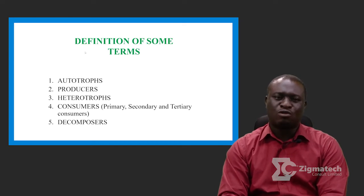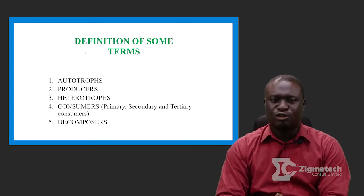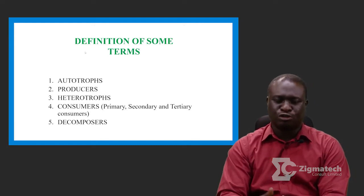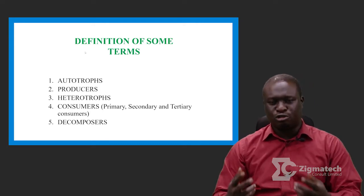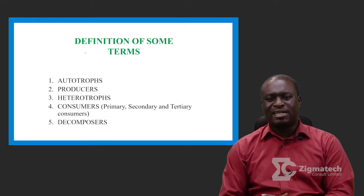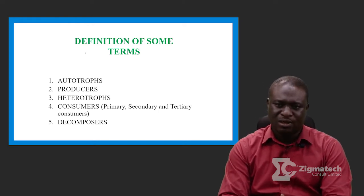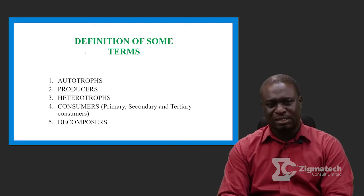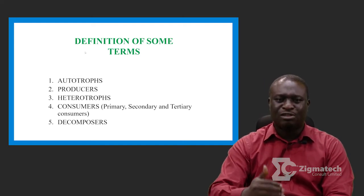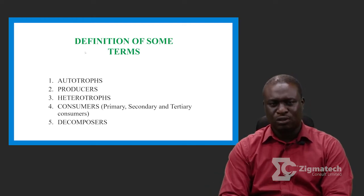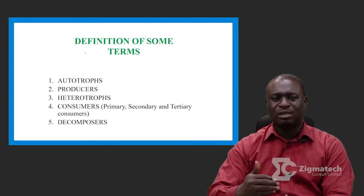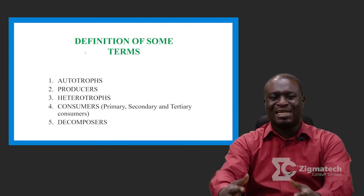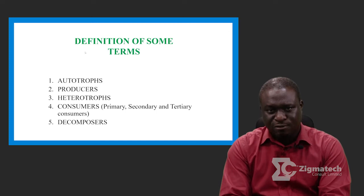We also have what we call tertiary consumers. Tertiary consumers depend directly on secondary consumers for their food or nutrients. And then finally we have decomposers. Decomposers are organisms that break down dead remains of plants and animals, or the dead remains of living organisms, and they derive nutrients from them.